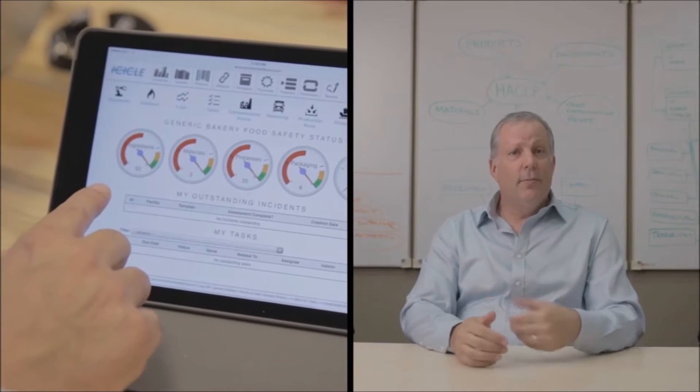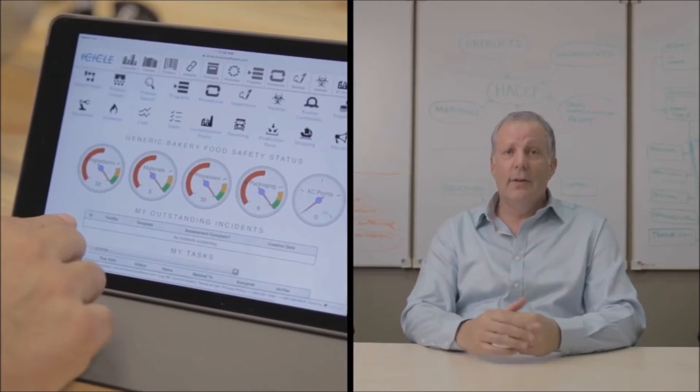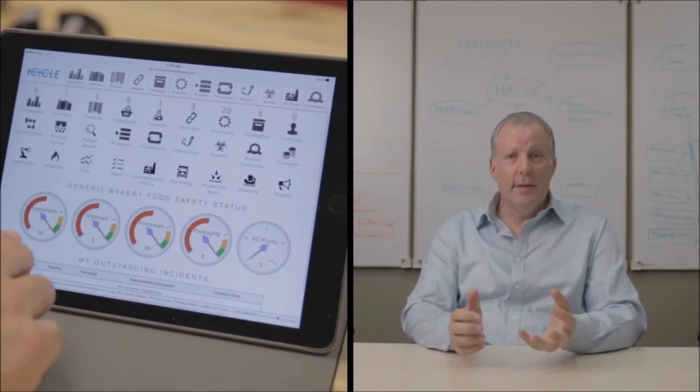Icicle is a user-friendly application that allows food processors to work with the elements they know like products, ingredients, and recipes.